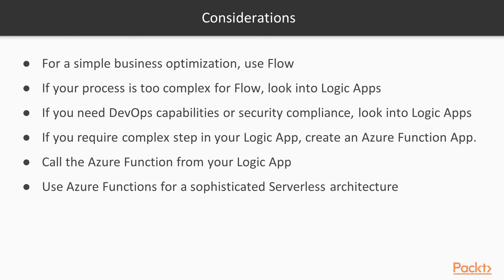Here are some general guidelines to consider when planning your architecture. If you have a simple business optimization, try Flow and see if it works. If your process is too complex for Flow but it's still a business optimization, look into Logic Apps. If you need DevOps capabilities or security compliance, look into Logic Apps first — though Azure Functions and Web Jobs can handle this too. If you require a complex step in your Logic App but the rest is straightforward, you can create an Azure Function that you call from your Logic App. And use Azure Functions for a more sophisticated serverless architecture when you want control over scaling and microservices.